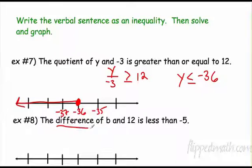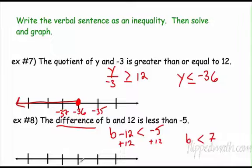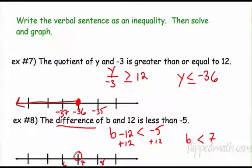Down here: difference means subtraction, so b minus 12 is less than negative 5. I add 12, so b is less than 7. Open dot at 7, and I want all numbers less than that going this way.